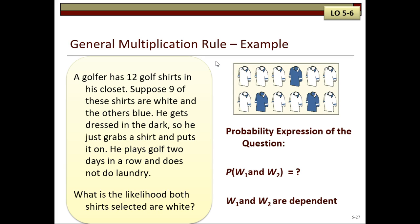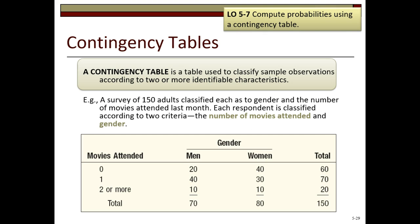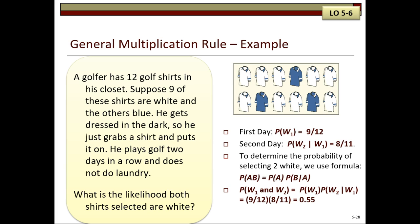So we want to find the probability of one white shirt and a second white shirt. The two white shirts are dependent.